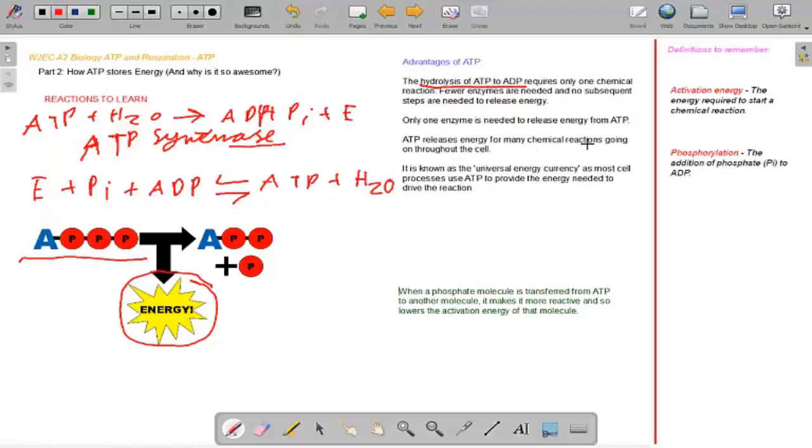ATP releases energy from many chemical reactions going on throughout the cell. This is very true and I have more examples later on in this tutorial. It is known as the universal currency as most cell processes use ATP to provide the energy needed to drive the reaction. Yes, if a chemical reaction is above the activation energy and it is more likely to cause successful collisions. But more on that in the chemistry tutorials. When a phosphate molecule is transferred from ATP to another molecule it makes it more reactive and so lowers the activation energy of that molecule. So this is a very nice way of saying it if the examiners ever have a question on it. I know they love to give you those written questions on ATP but hopefully I should go through those shortly.